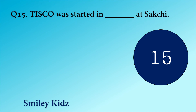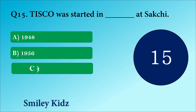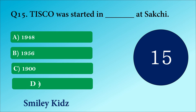Question number 15. Tata Iron and Steel Company Limited was started in Dash at Sakchi. The options are A. 1948, B. 1956, C. 1900 or D. 1907.